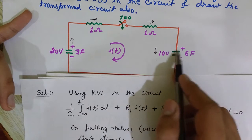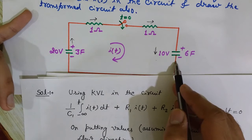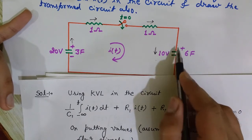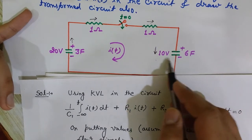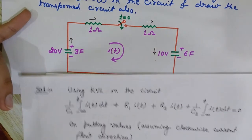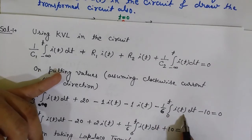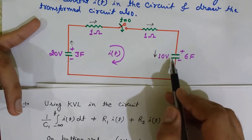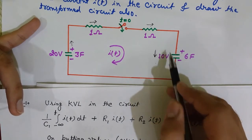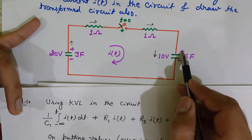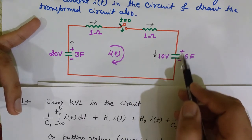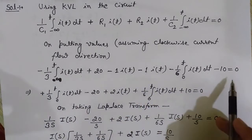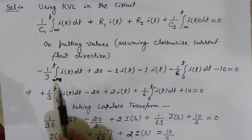Moving in the assumed current direction across C2, the terminal we arrive at is at lower potential. The initial voltage of 10 volts has its higher terminal on the side we leave, so the difference (final minus initial) is negative — giving minus 10 volts. The complete KVL equation, after multiplying both sides by negative one, becomes: minus 20 + (1/3)∫I dt + 2·I(t) + (1/6)∫I dt + 10 = 0.